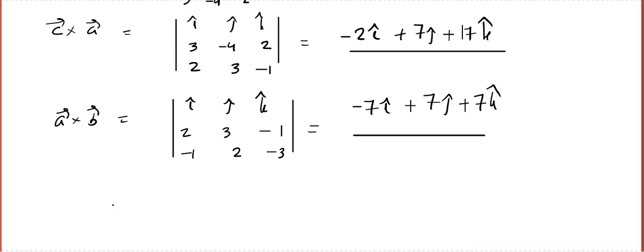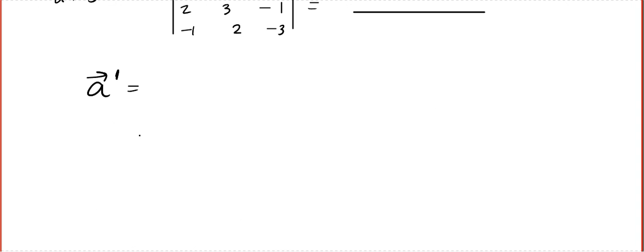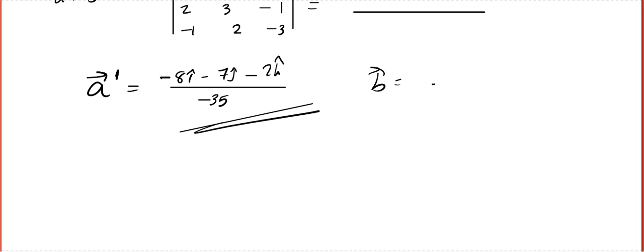Now tell me what is A dash. A dash equals B cross C, which is minus 8i, minus 7j, minus 2k, whole divided by minus 35. B dash equals C cross A by minus 35. C dash equals A cross B by minus 35. Practice a lot of problems based on this. This is very important.